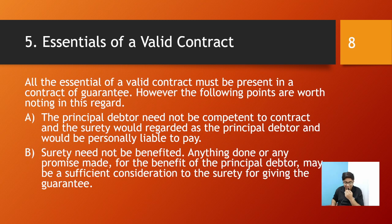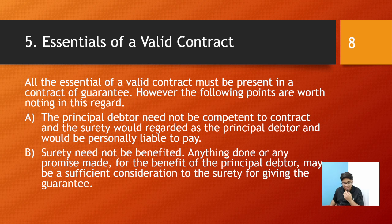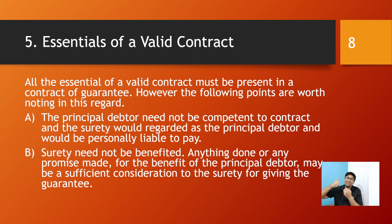Every essential of a valid contract should also be present in a contract of guarantee. A contract of guarantee is a special contract, but it is still a contract, so every essential of a contract applies. However, one notable point is that the principal debtor need not be competent to contract — the surety would be regarded as the principal debtor and would be personally liable to pay if the principal debtor is not capable of paying.